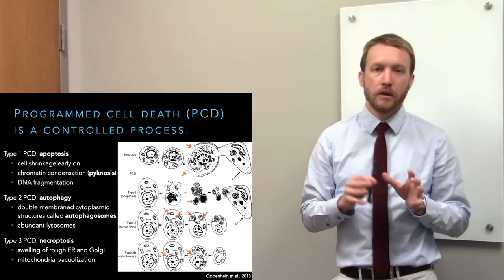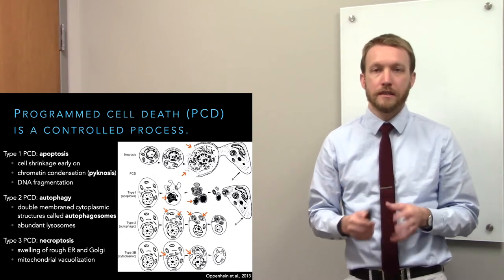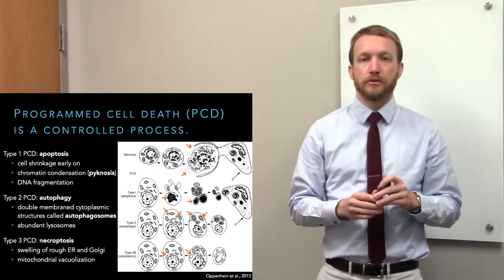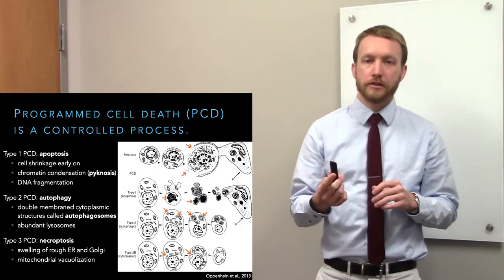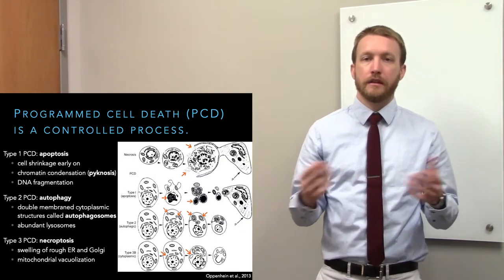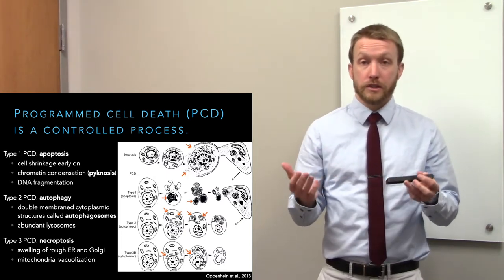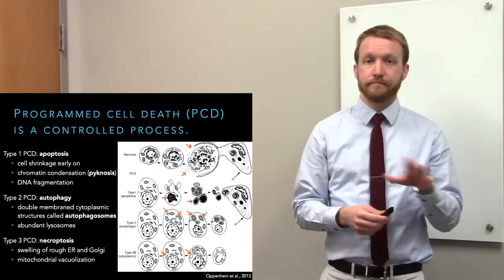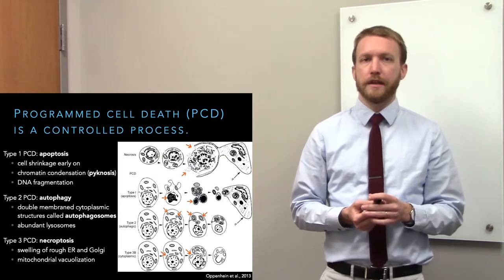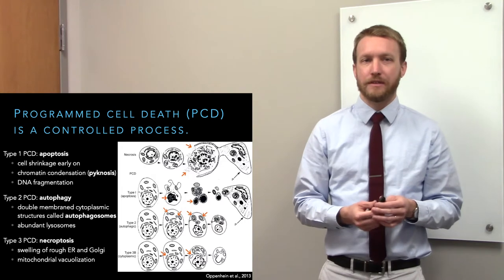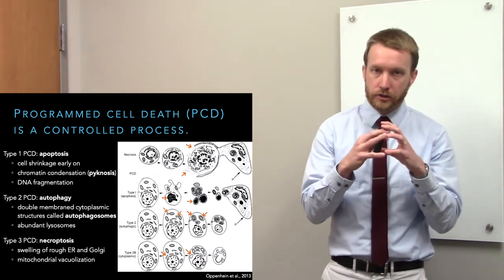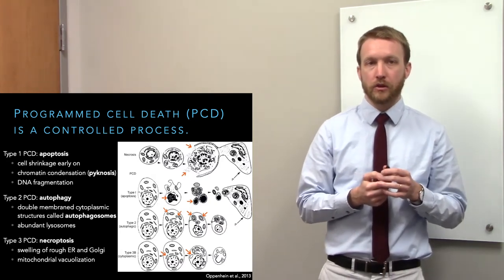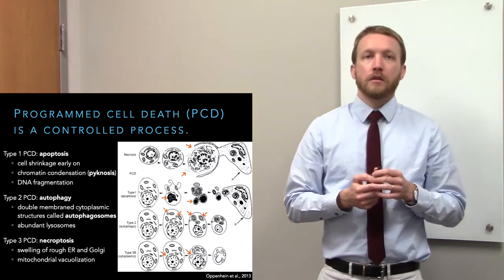Type 2 programmed cell death doesn't always result in death. With autophagy the cell eats itself, done during times of starvation — a way for the cell to harness the last bit of energy and building blocks when it doesn't have enough in the environment. If this goes on long enough, autophagy does lead to cell death, but the cell can rescue itself from autophagy. Once we initiate apoptosis, it's over. There's also a combination between necrosis and apoptosis called necroptosis, where we see swelling of the cell, particularly in the endomembrane system — the rough ER and Golgi.